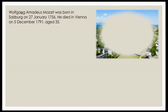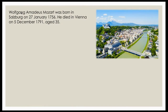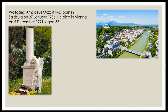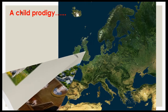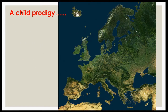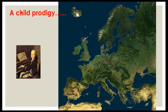Mozart was born in Salzburg — a very pretty city, and the place where The Sound of Music was filmed. He died in Vienna at the young age of 35, sadly a very poor man. He was from a very musical family, and both he and his sister were what we would call child prodigies. His father saw it as a great opportunity to make money.